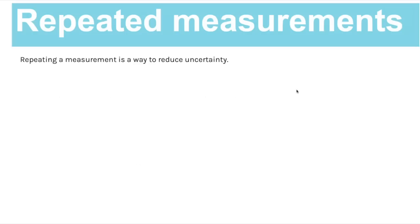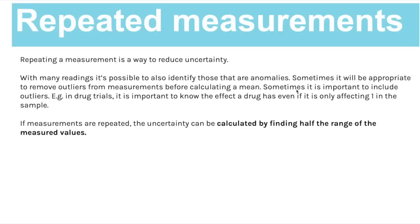Repeated measurements are another way to reduce uncertainty. With many readings it's also possible to identify anomalies, which in some cases you can remove before calculating the mean. However, in biology it's sometimes incredibly important to leave outliers in - particularly in ecology, where we want to know exactly the effects something has on all organisms. The same applies in drug trials: even if only one or two people in a thousand show a side effect, that scales up to many people across the whole population.